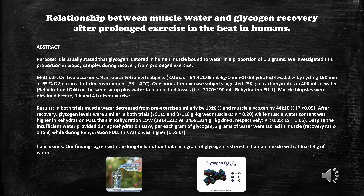If you refer back to the slide where it showed all the elements that comprise muscle tissue, you will recall glycogen being listed. Glycogen plays a very important role in muscle tissue being able to retain water. Glycogen will hold water in a one to three ratio — that means one gram of glycogen holds three grams of water. A good way to visualize this is to imagine a chocolate almond, where the almond represents glycogen and the chocolate represents water.